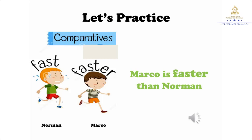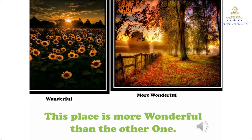Están especificando que uno de ellos es más rápido que el otro. Una de nuestras oraciones sería: Marco es más rápido que Norman. We can also make a comparison between places. We have one which is wonderful, but we have another one which is more wonderful. Este lugar es más maravilloso que el otro: This place is more wonderful than the other one.